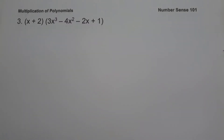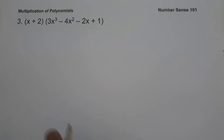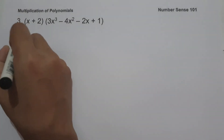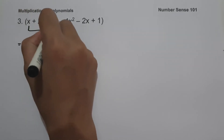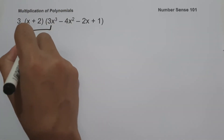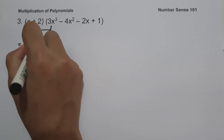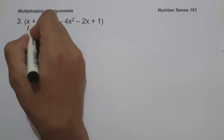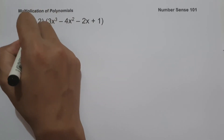On example number 3, we have the quantity x plus 2 times the quantity 3x cubed minus 4x squared minus 2x plus 1. Let us have x multiplied by 3x cubed, which is 3x raised to 4. x multiplied by negative 4x squared is negative 4x cubed.